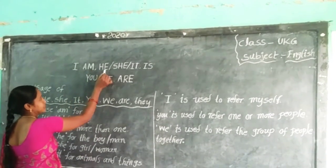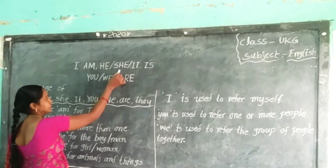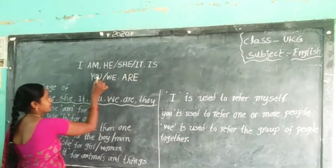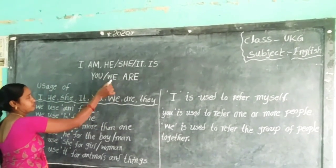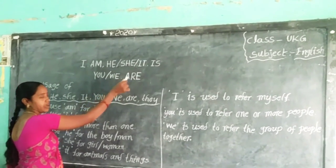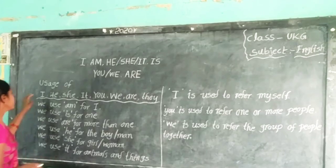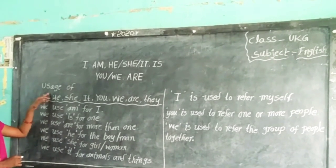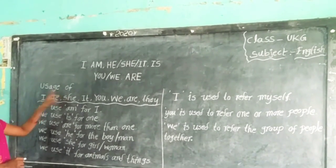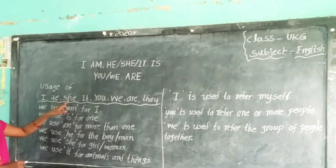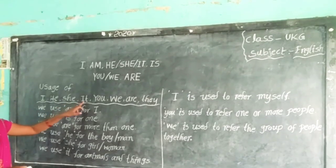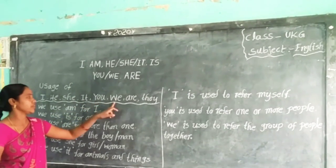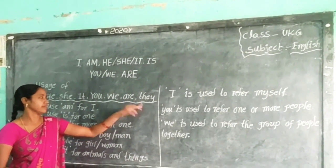I am, he, she, it, is, you, we are. Now, we use I, he, she, it, you, we, are, they.